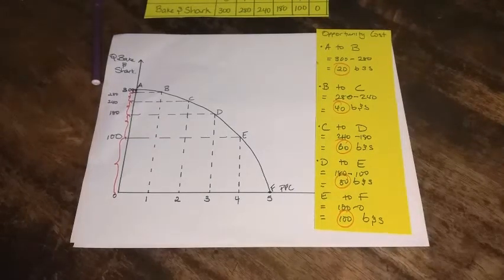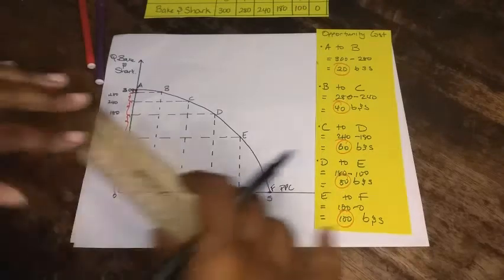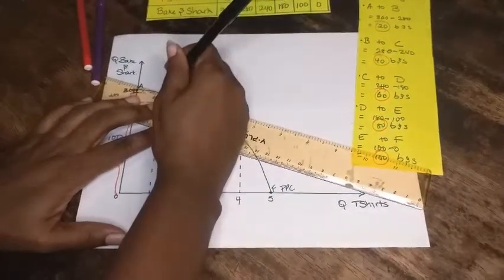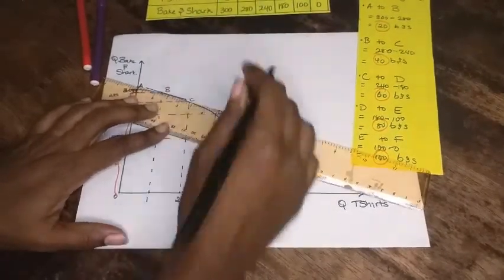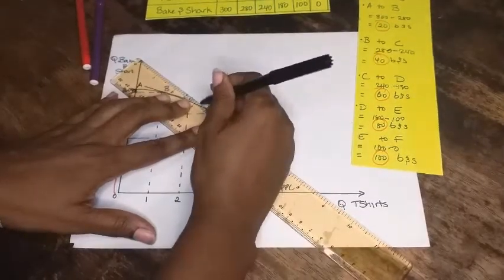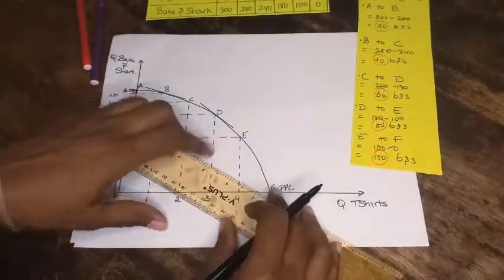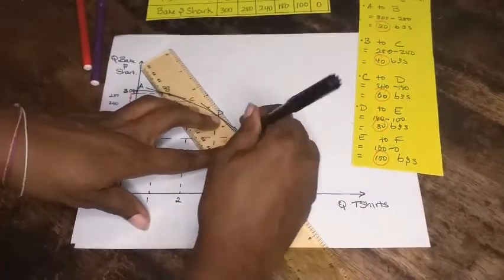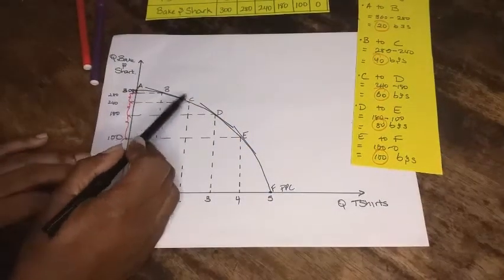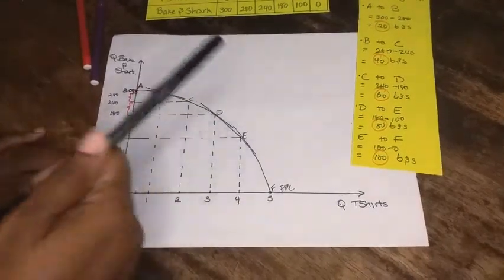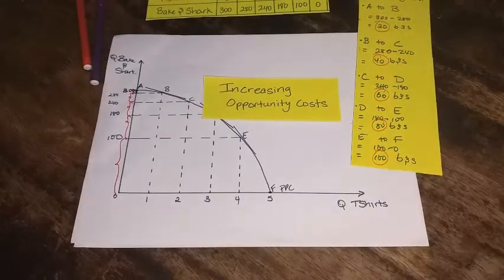Likewise, if you want to look at it in terms of the marginal rate of transformation — looking at the gradients at each point along the curve — this is where your CSEC maths would come into play, if you remember how to find the gradient of a curve at a point. You need to hold your ruler tangential to the point. When you do that, you realize that the gradient of the curve starts to get steeper, meaning the gradient is increasing, and hence the increasing opportunity cost.